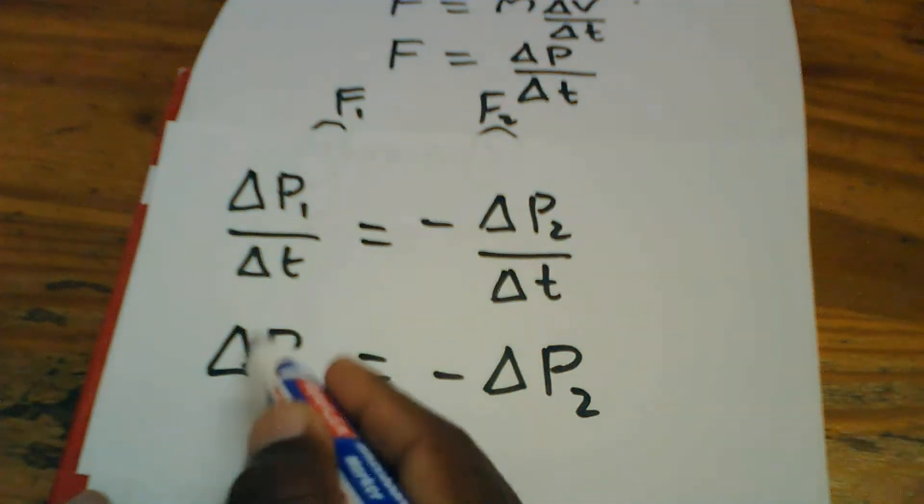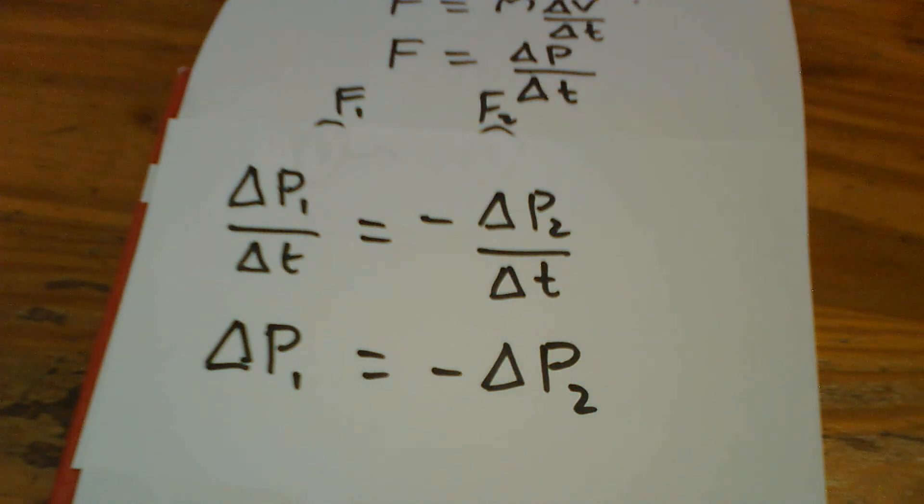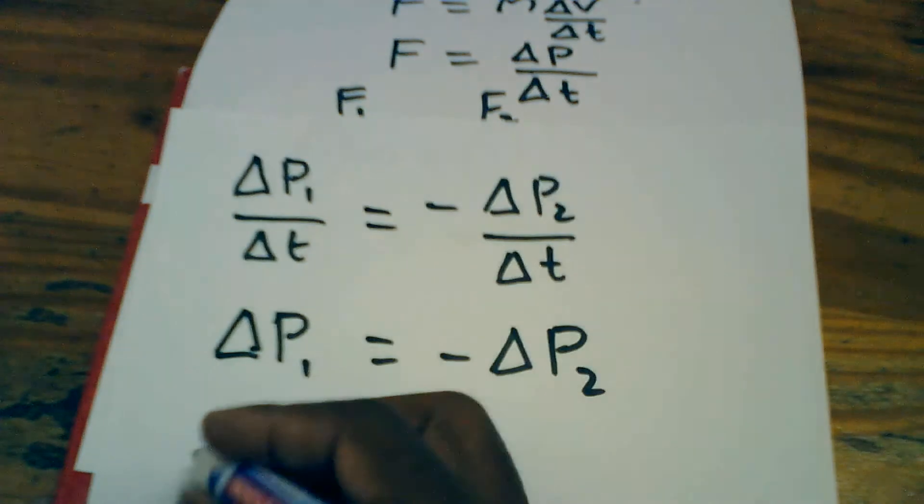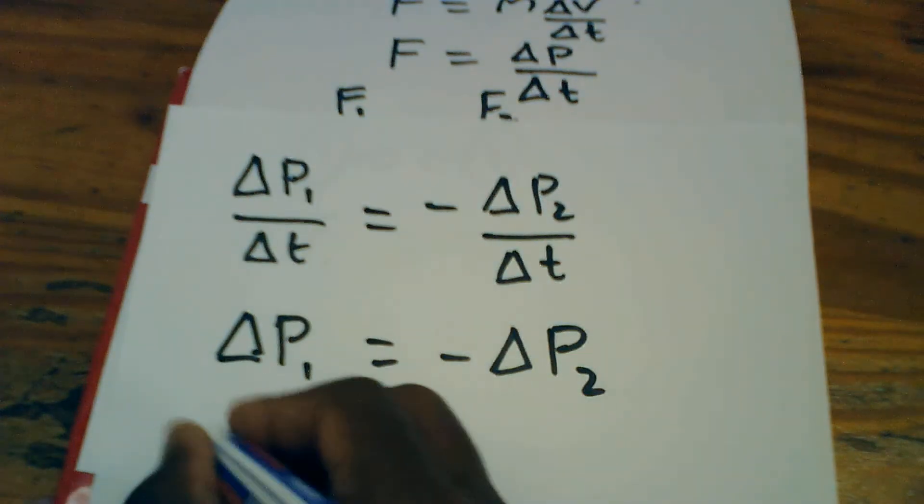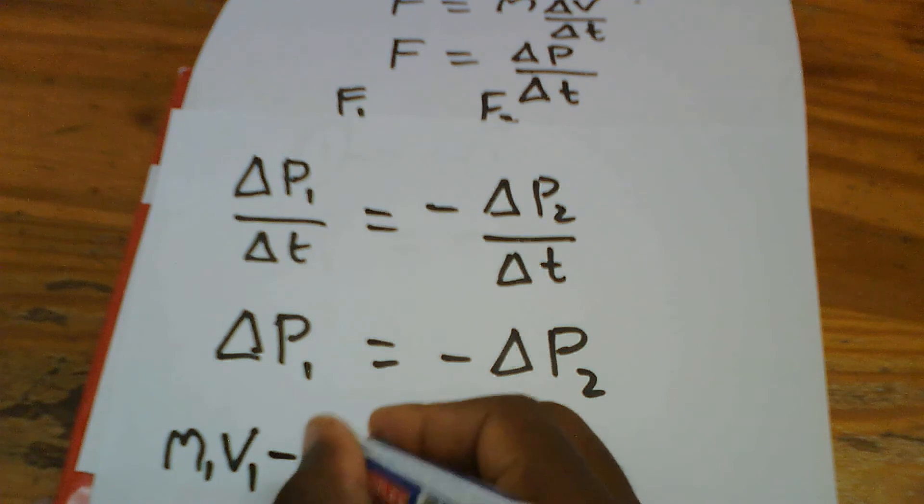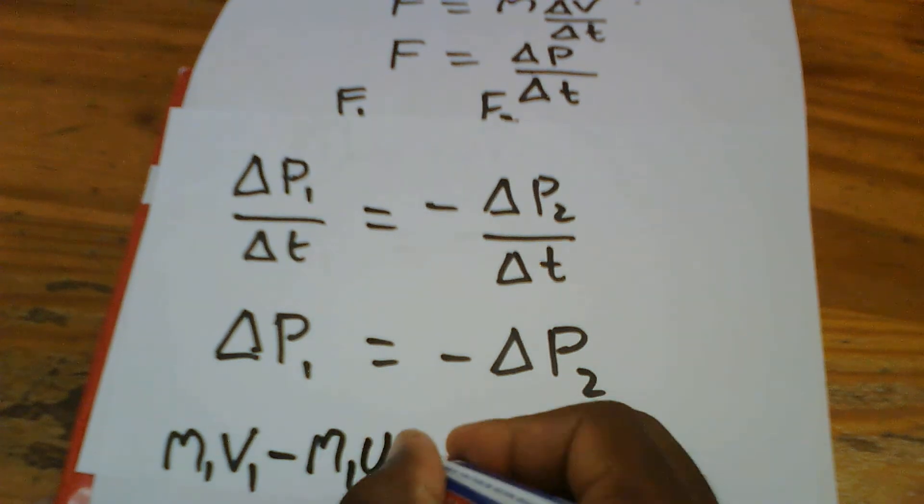So, we know that the change is the same as the final minus the initial. This means that delta P1 is the same as M1V1 minus M1U1.